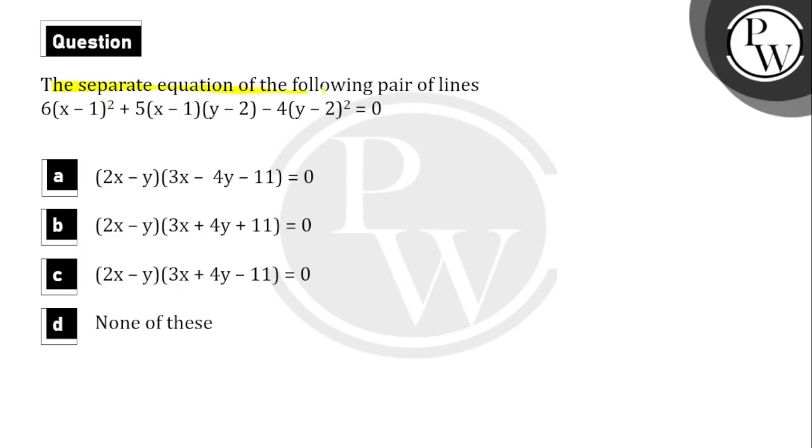Hello, let's read the question. The question is: find the separate equation of the following pair of lines: 6(x-1)² + 5(x-1)(y-2) - 4(y-2)² = 0.